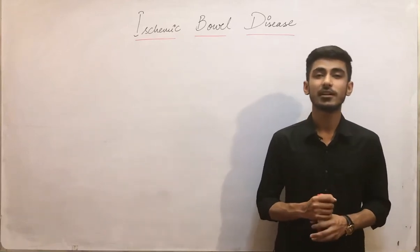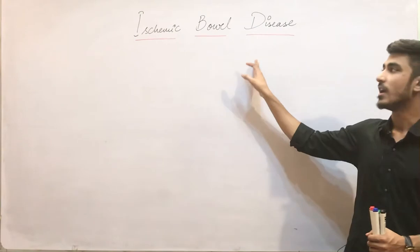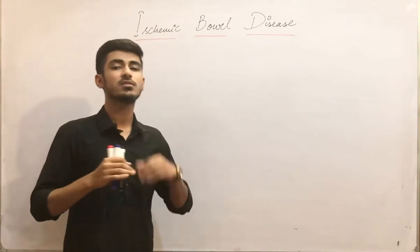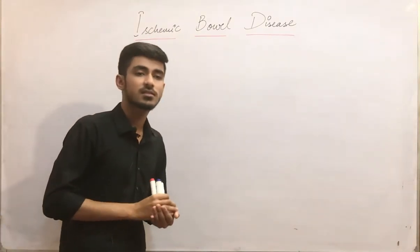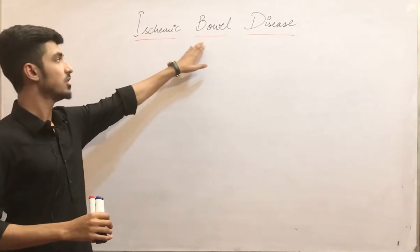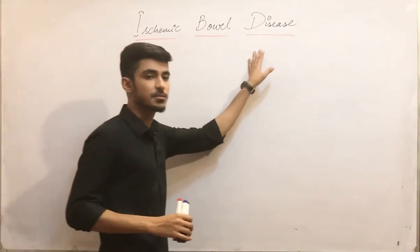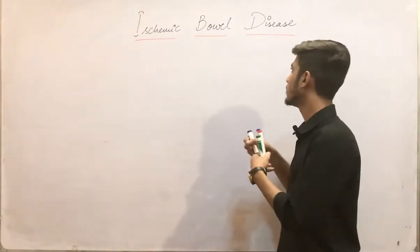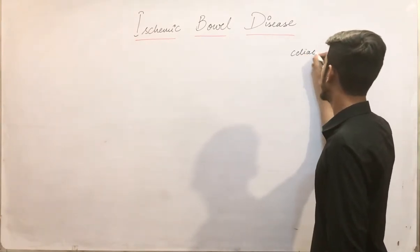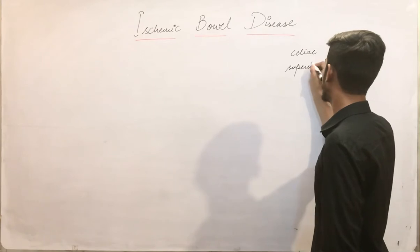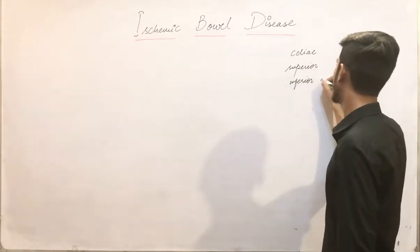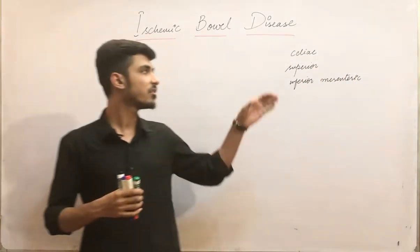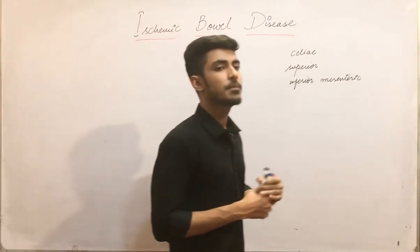This is Dr. Saad, and today my topic is ischemic bowel disease. As its name indicates, ischemic means when there is a loss of blood supply to a certain area, that area becomes ischemic — and that area here is the bowel. Now, the blood supply of the GIT consists mainly of three arteries: the celiac artery, the superior mesenteric artery, and the inferior mesenteric artery.